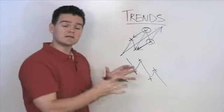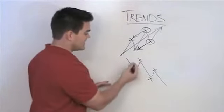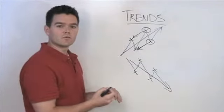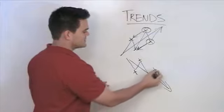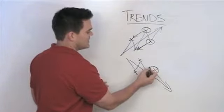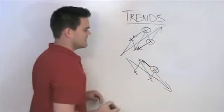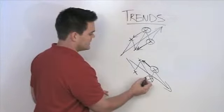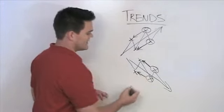Now in a downtrend, we're seeing just the opposite. We still have highs and lows and we can tell that this stock is trending downward. But what we're looking at here is we say this high right here is lower than that high right there. And this low right here is lower than that low.